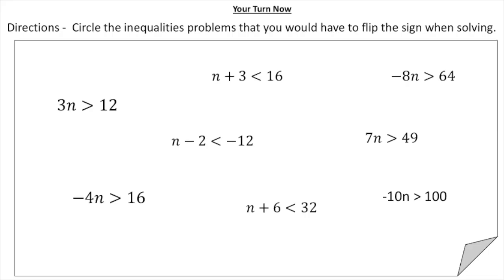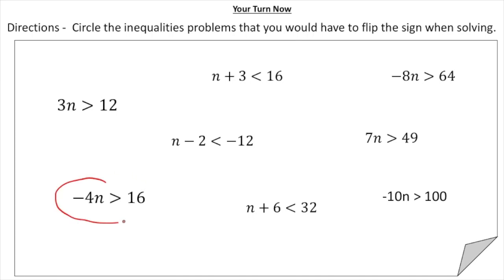Welcome back. Let's see how you did with these practice problems. You had to circle the inequality problems where you would have to flip the sign when solving. The first one: 3n is greater than 12 — we divide by positive 3, so we do not flip. That one is a no. The next: negative 4n is greater than 16 — we divide by negative 4, which means we flip the sign. So you absolutely need to flip that one.